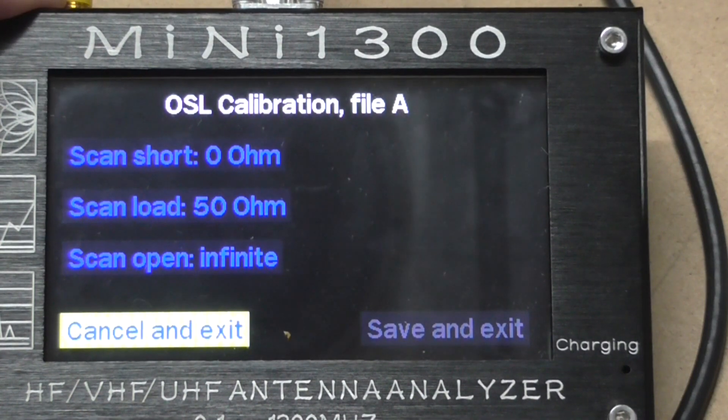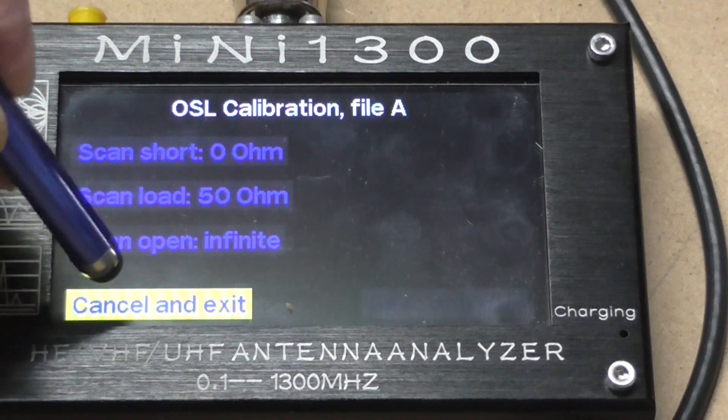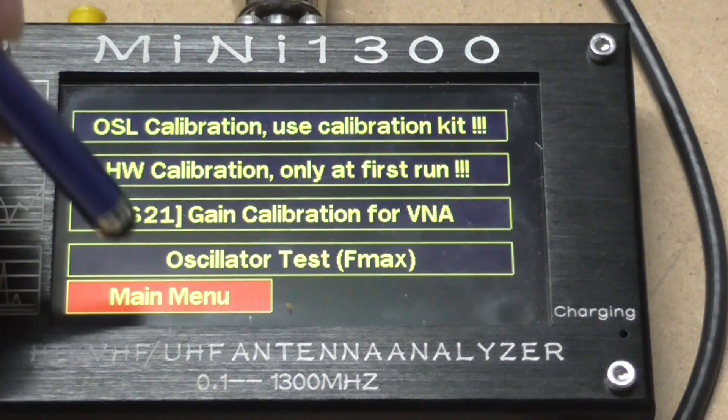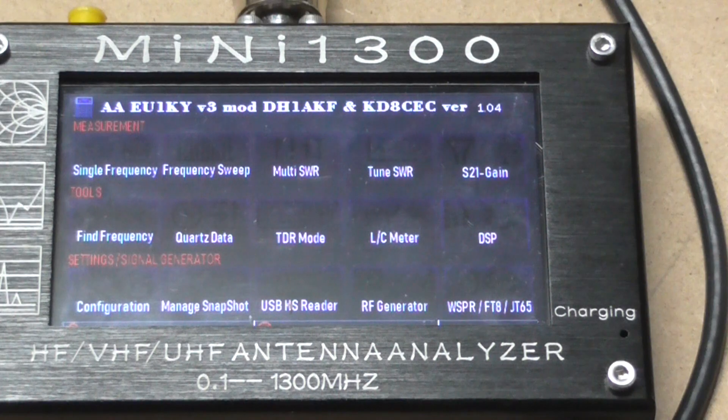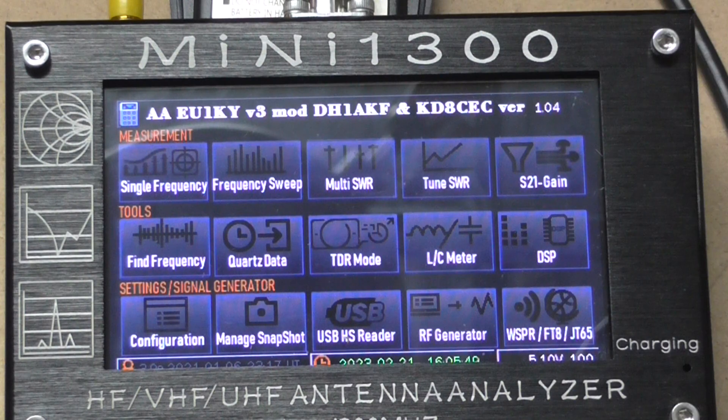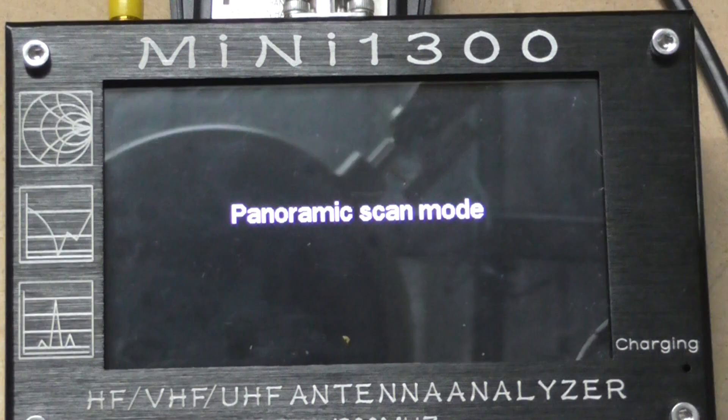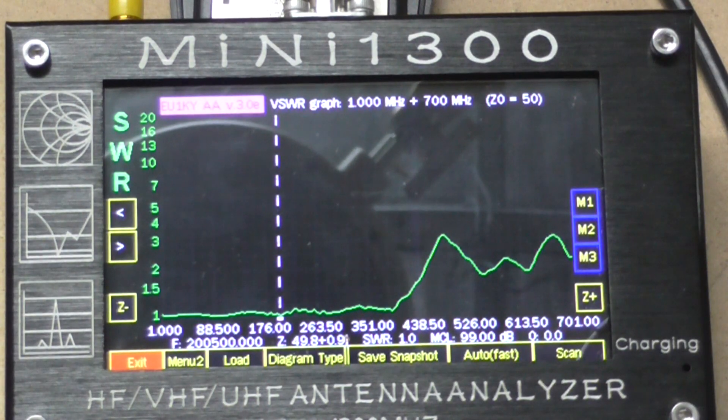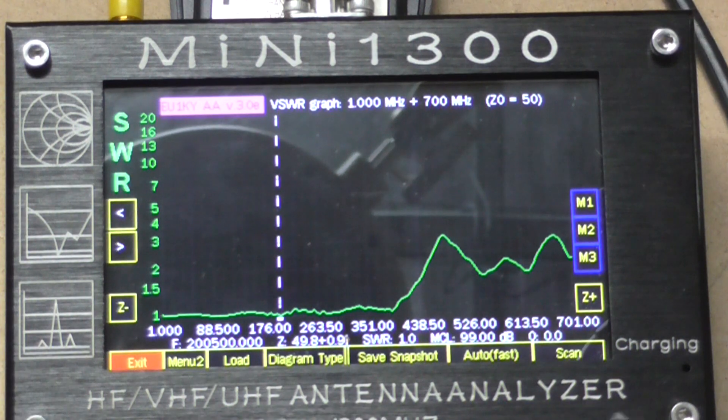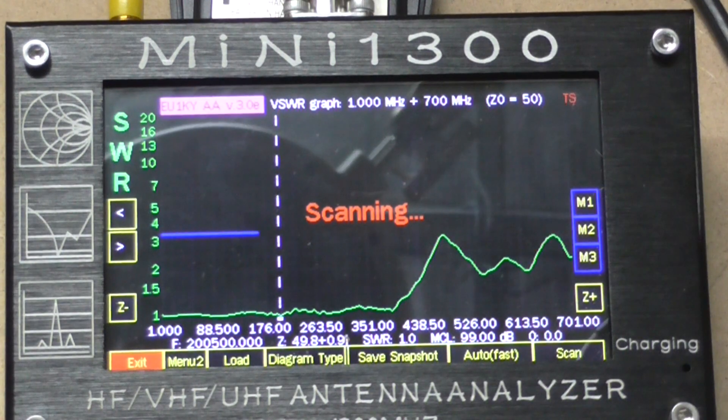What we'll do now is go and have a look at some of the graphs of the SWR that we'll get from this device. First off, let's do a frequency sweep and we'll run from 1 MHz up to 700 MHz - 650 is the limit of the dummy load. We'll just hit the scan button and let it do a scan for us.